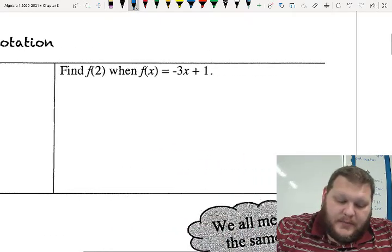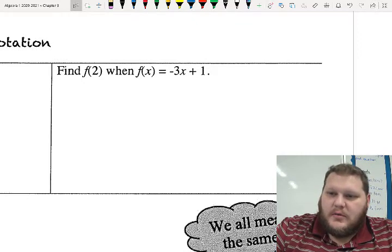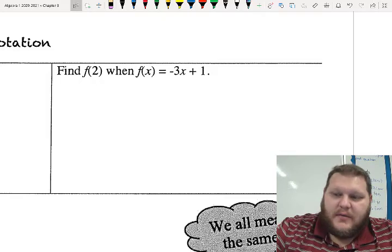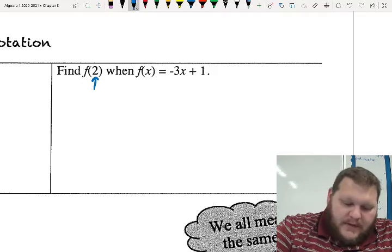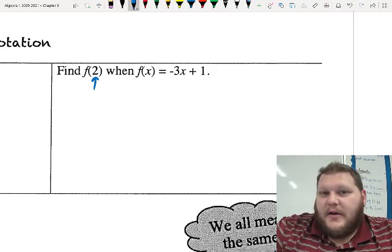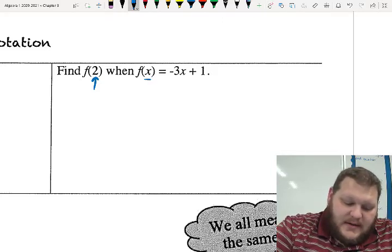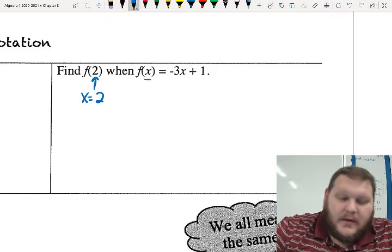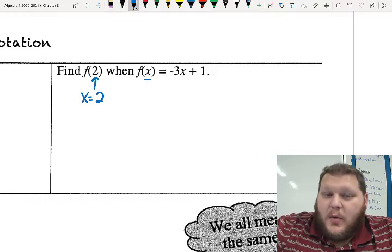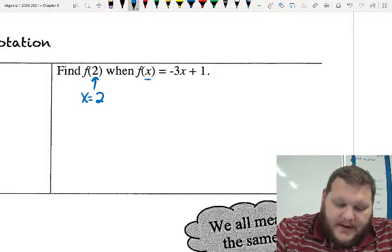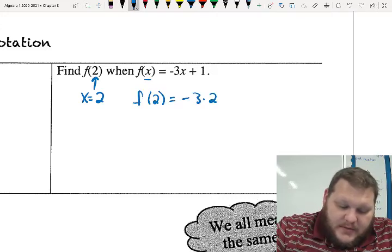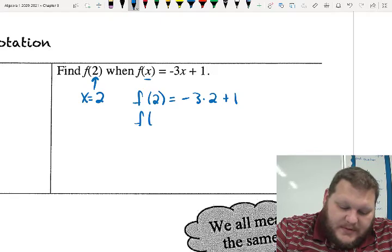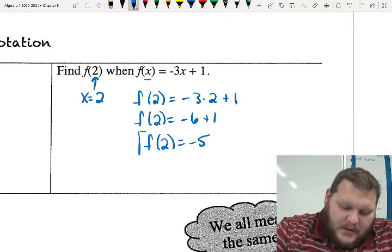Now this new notation here is asking me to find f of 2 when my function is f of x equals negative 3x plus 1. If I'm asked to evaluate f of 2 because my function here is described as f of x, that's telling me basically here the exact same thing. I'm asked to evaluate my equation when my x value is positive 2. So if I let my x value be 2, f of 2 is negative 3 times 2 plus 1. So we end up doing the same steps. We get negative 6 plus 1. So f of 2 is negative 5.